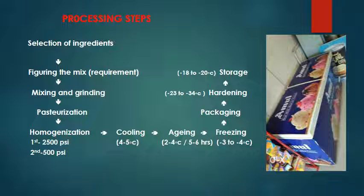In more detail: first, selection and calculation of ingredients. Then mixing and grinding, pasteurization and homogenization done in two stages — first stage at 2500 PSI, second stage at 500 PSI. Then cooling and aging. After that, freezing, in which air is incorporated and the mix is brought below freezing point. After that, packaging and hardening — further freezing to minus 23 to minus 34 degrees Celsius — then final storage at around minus 18 to minus 20 degrees Celsius.